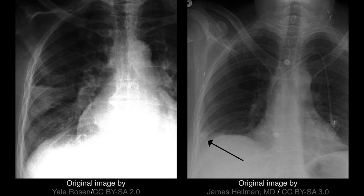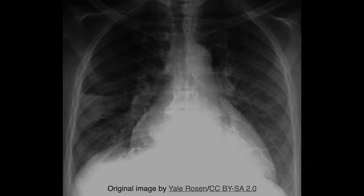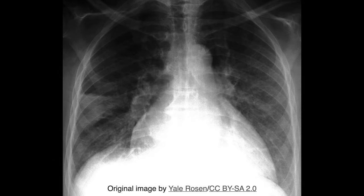The plain radiograph of a patient with a pulmonary infarction can be deceivingly normal, without any striking abnormality identifiable. In this x-ray, we can see a sign known as Hampton's Hump — a wedge-shaped opacity in the periphery of the lung, which is a rare but suggestive finding of pulmonary infarction. The base is juxtaposed to the pleural surface, while the rounded apex (the hump) is angled towards the hilum.